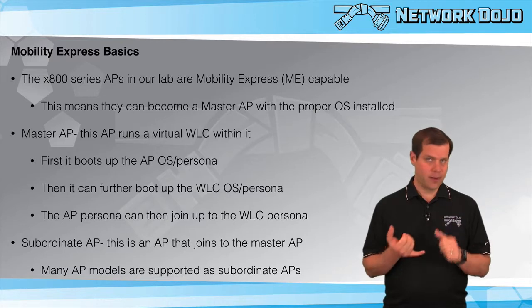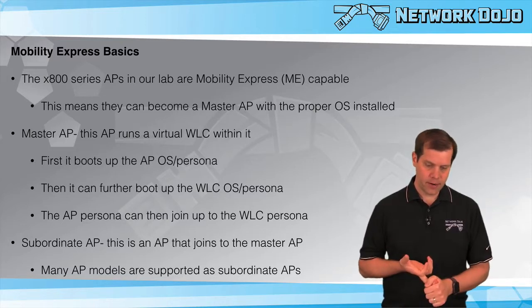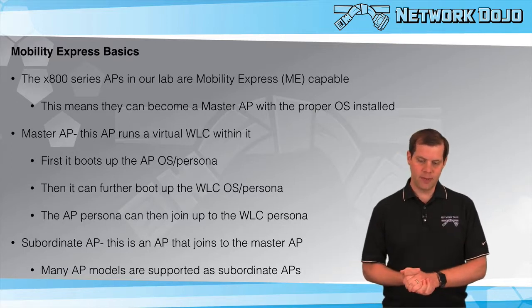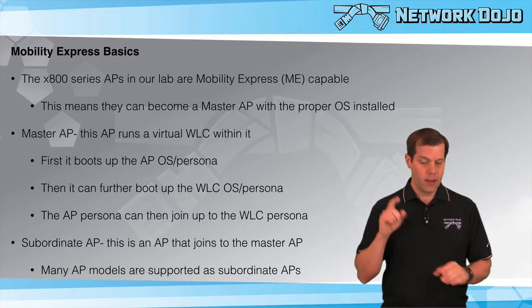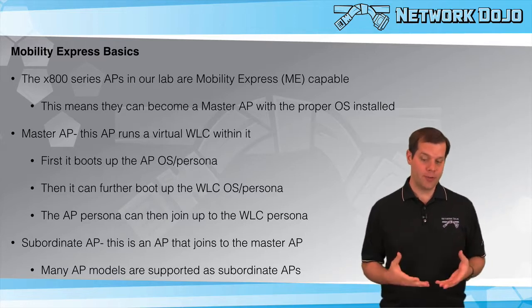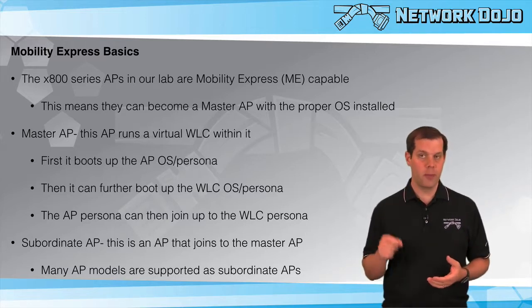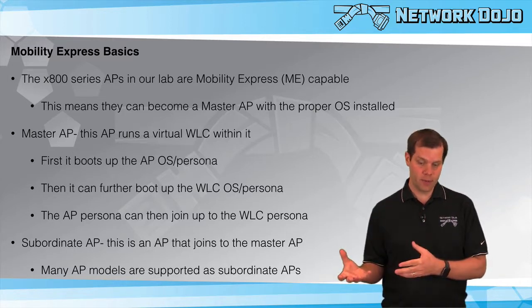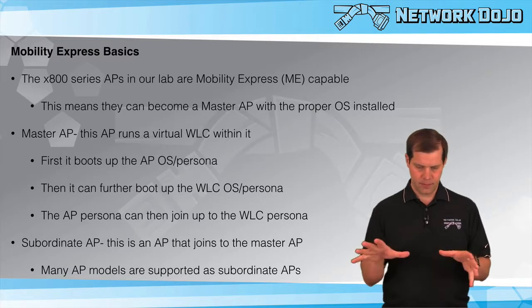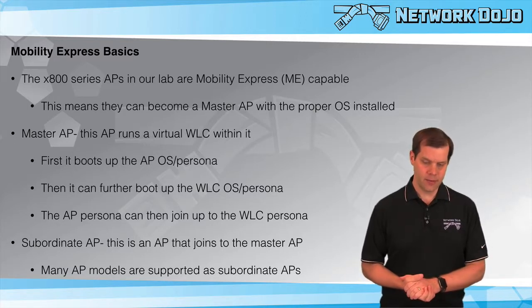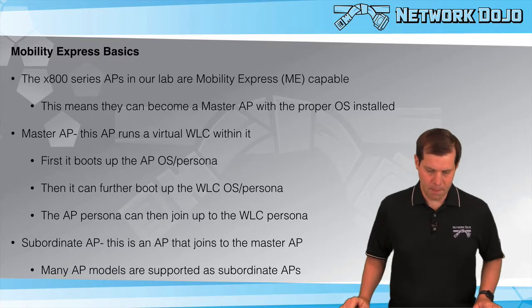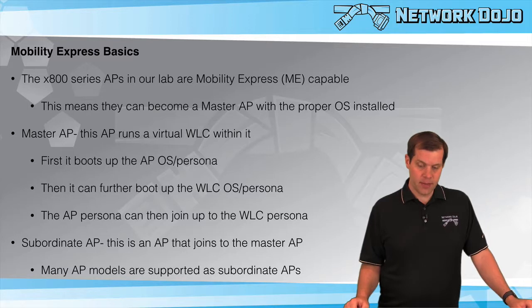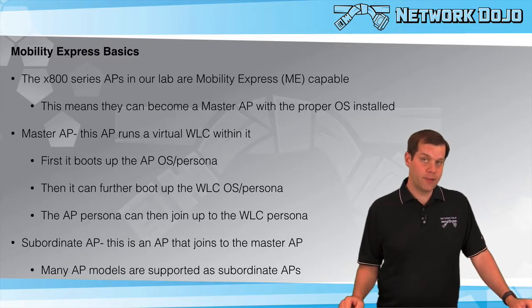The x800 series of APs — the 1800s, 2800s, and 3800 series — in our lab and in the real world are Mobility Express capable APs, which means they can become something called a master AP, assuming they have the proper operating system installed. These APs could have either the Mobility Express operating system or the classic AP operating system installed, depending on what type of AP you want.